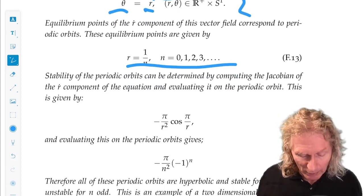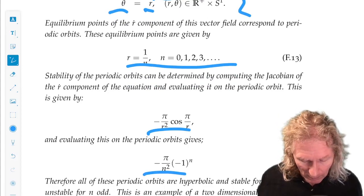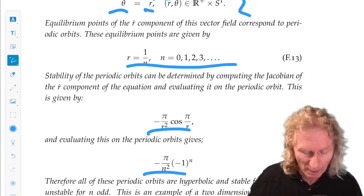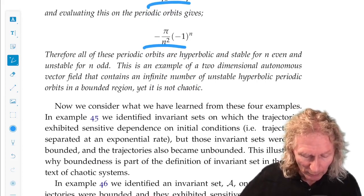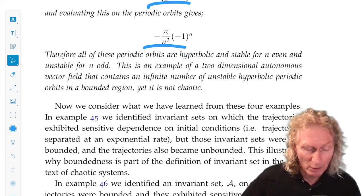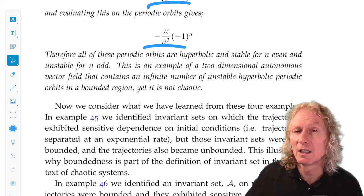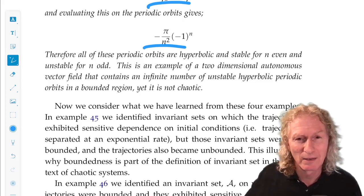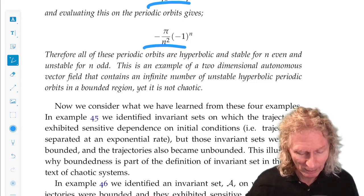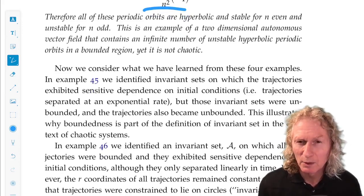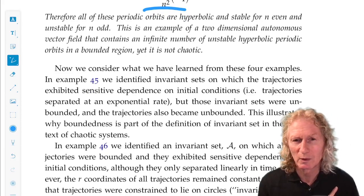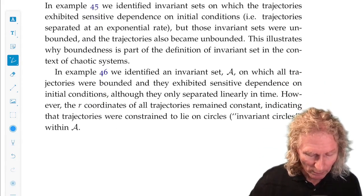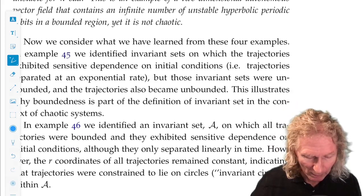We can check their stability by just computing the Jacobian, and they alternate between unstable and stable. So this is an example of a two-dimensional autonomous vector field that contains an infinite number of unstable periodic orbits in a bounded region but it's not what we would call chaotic. I didn't do the analysis for sensitive dependence on initial conditions for this example and it would be an interesting example for you to do.